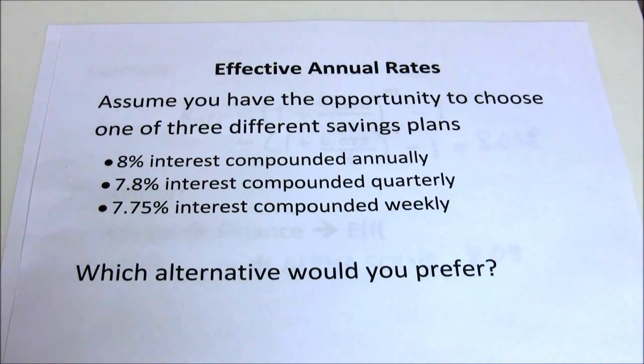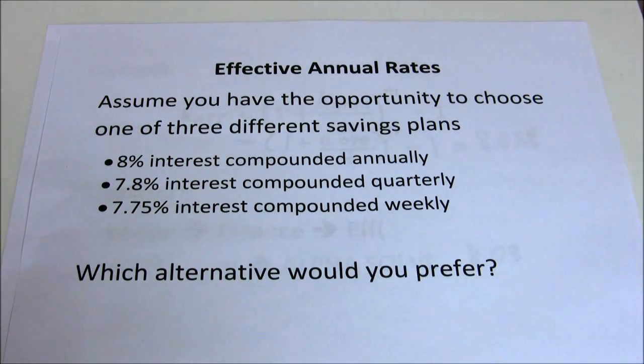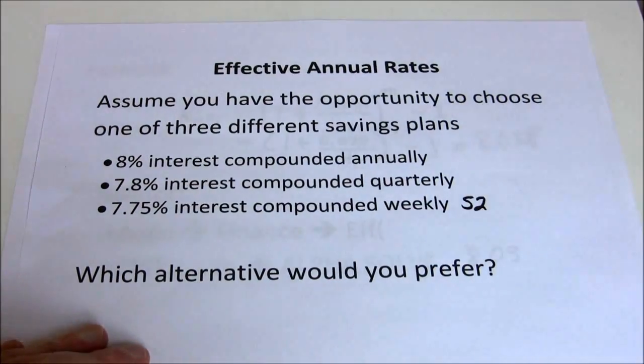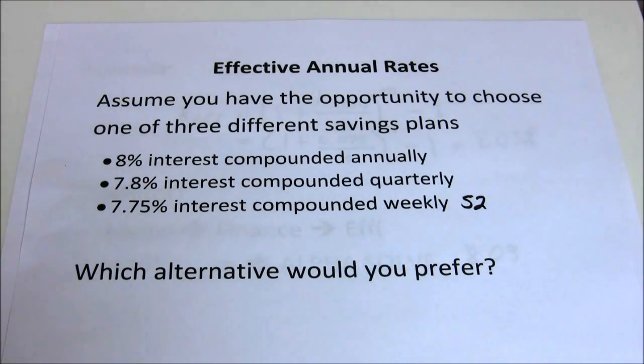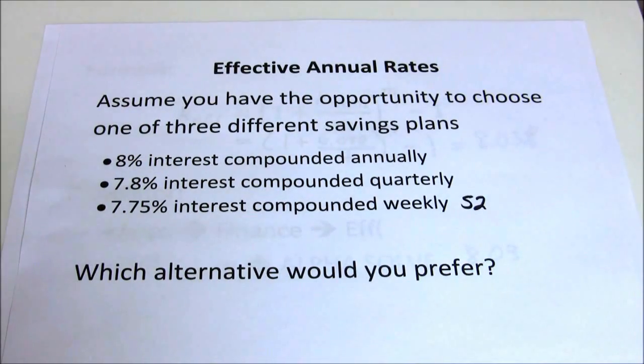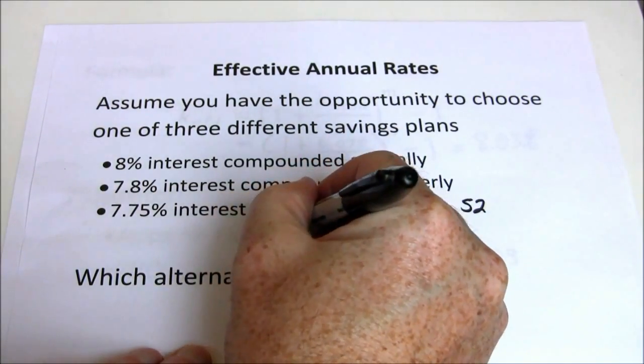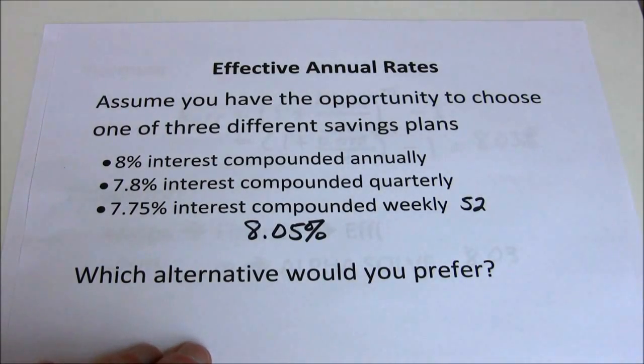If we have 7.75% compounded weekly, note weekly is 52 periods per year. We've got 52 weeks in a year. A lot of people will mistakenly use 48 there because they approximate there's 4 weeks in a month. But that would be 28 days in every month and we know February is the only month with 28 days. There's a few extra every other month. So we actually have 52 weeks in a year. Once we get that set up, again you can use either approach, the formula or the financial calculator. You should get 8.05% for your final answer.